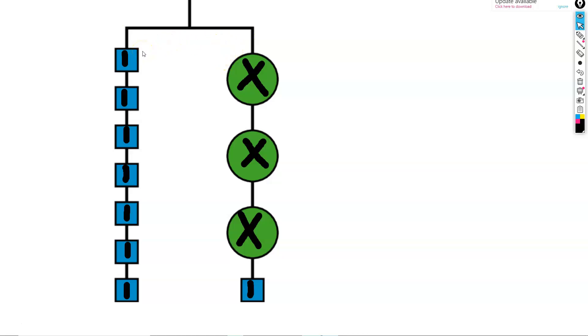On the left side of our hanger, we have 7 ones. On the right side, we have 3 x's and 1. This tells us that 7 ones weighs the same as 3 x's and 1 one. We can represent this with the equation 7 equals 3x plus 1.